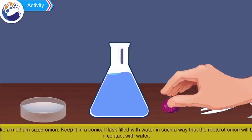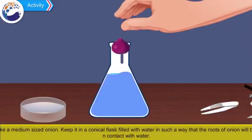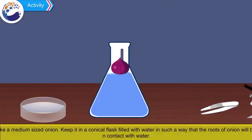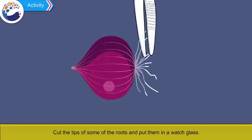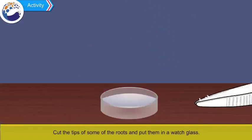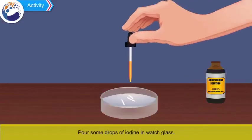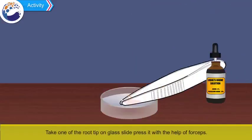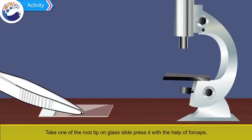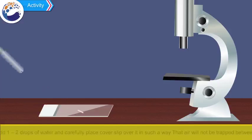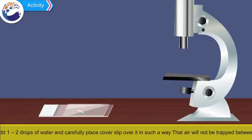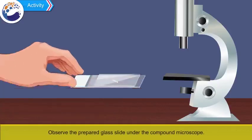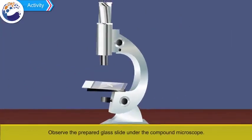Procedure: Take a medium-sized onion, keep it in a conical flask filled with water in such a way that the roots of the onion will be in contact with the water. Observe the roots after 4 to 5 days. Cut the tips of some roots and put them in a watch glass. Pour some drops of iodine in the watch glass. Take one root tip on a glass slide and press it with forceps. Add one or two drops of water and carefully place a cover slip over it so that air will not be trapped in between. Observe the prepared slide under the compound microscope.